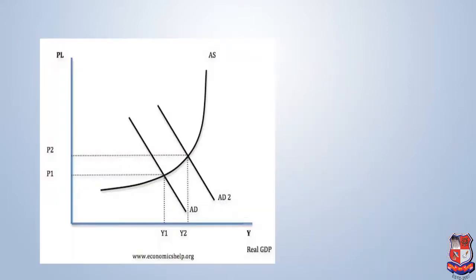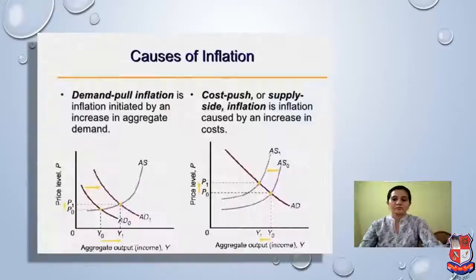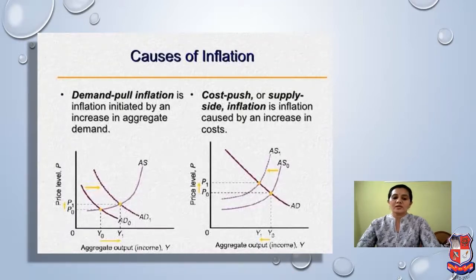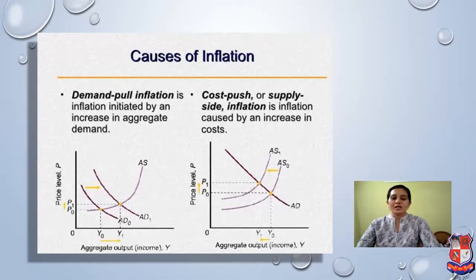We can see in this graph that the x-axis represents output and the y-axis represents price level. There are two main causes of inflation: demand-pull inflation and cost-push inflation. Demand-pull inflation is initiated by an increase in aggregate demand, whereas cost-push or supply-side inflation is caused by an increase in cost.